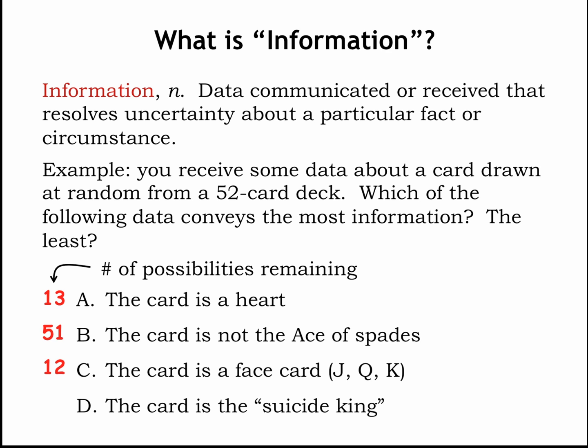d) You learn instead that the card is the suicide king. Our little blue friend is showing us that this is actually a particular card — the king of hearts, where the king is sticking the sword through his head. No uncertainty here; we know exactly what the choice was.